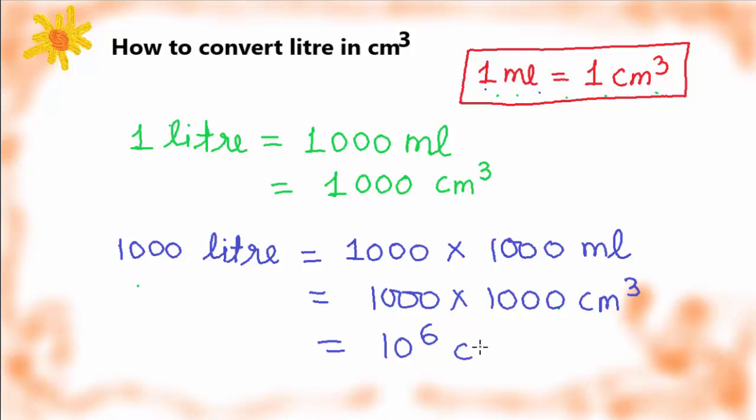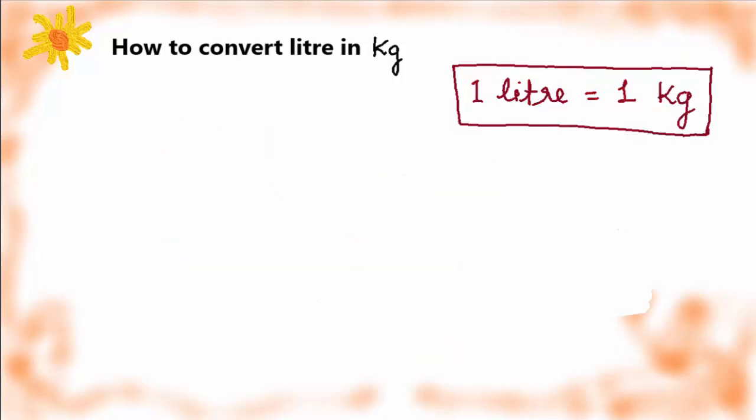Next is how to convert liter to kg. For that, you need to remember this conversion: one liter is exactly equal to 1 kg. So if you're given 2 liters, that would be equal to 2 kg. 50 liters would equal exactly 50 kg.